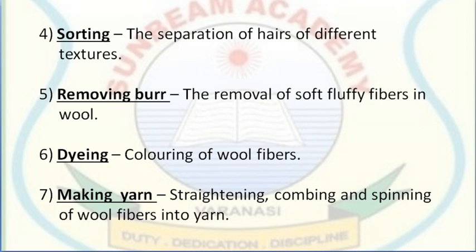After dyeing, the next step is making yarns. The fibers are straightened by passing through rollers, then combed to separate each fiber, and then spun into yarns. So three sub-steps are involved: straightening, combing and spinning. After spinning, the wool is either woven or knitted.